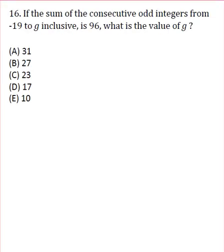RadicalPrep.com. Okay, this question says if the sum of the consecutive odd integers from negative 19 to G inclusive is 96, what is the value of G?